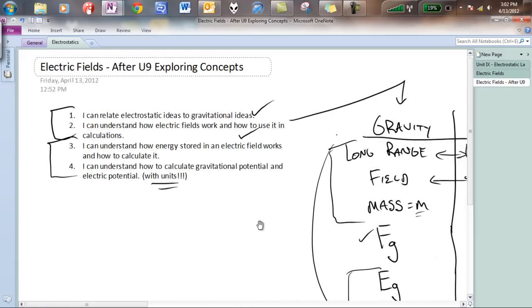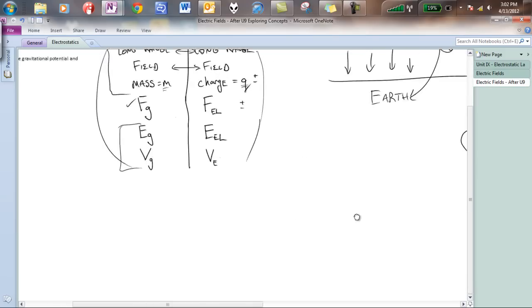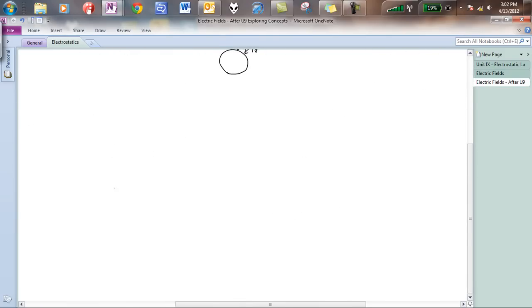Looking at this, I can understand how energy stored in an electric field works and how to calculate it. The easiest way to do this is to go back to the gravitation connection. And so let's go back to Earth. And if you remember correctly, we looked at energy being stored by an object that would be sitting on Earth. And then, as we raised it up to a certain height, we know it gained energy.